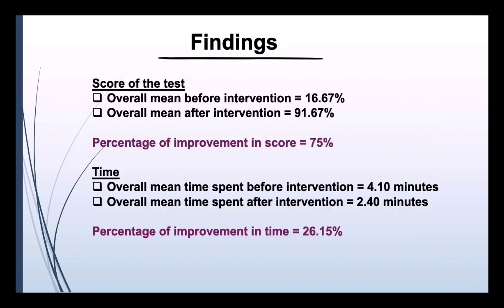Our findings show that for the score of the test, the overall mean before intervention is 16.67%, the overall mean after intervention is 91.67%, and the percentage of improvement in score is 75%. The overall mean time spent before intervention is 4.10 minutes and after intervention is 2.40 minutes, giving a percentage of improvement in time of 26.15%.